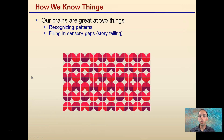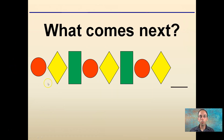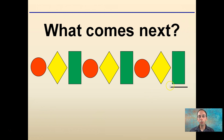So how do we know things? Our brains are great at two major things: recognizing patterns and filling in sensory gaps, typically through the process of storytelling. You can see there's a definite pattern here — we can look at this pattern and determine what comes next. Take a look here for a second and determine what comes next. If you said a green rectangle, you'd be correct.